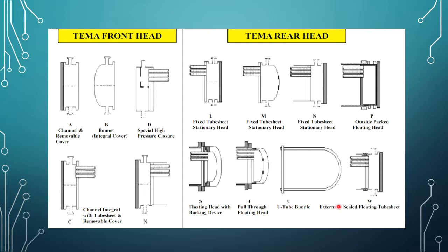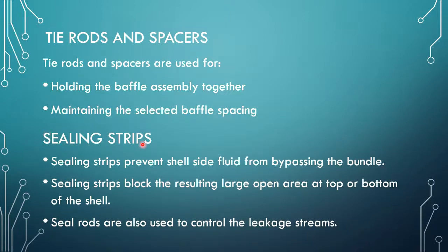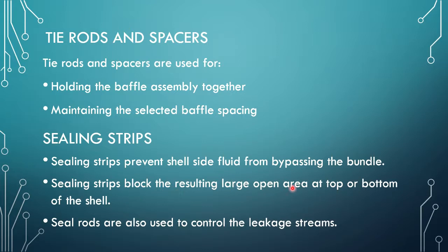Next is the sealing strip. Sealing strips are generally used to prevent the shell side fluid from bypassing the tube bundle. Sealing strips block the resulting large open area at the top or bottom of the shell, and seal rods are used to control the leakage stream. Thanks for watching my video.